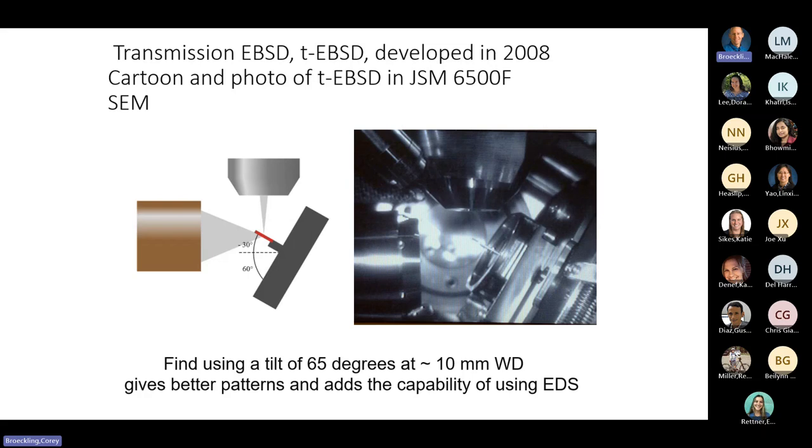Here's transmission EBSD. This was sort of an offshoot of some interest in doing some fine structure analysis. The standard EBSD is in reflection, and so your resolution is probably about 30 to 40 nanometers in diameter. When you go to transmission, you can get down less than 10 nanometers in diameter. The only requirement here is you have to have a sample that's transparent to the electrons.